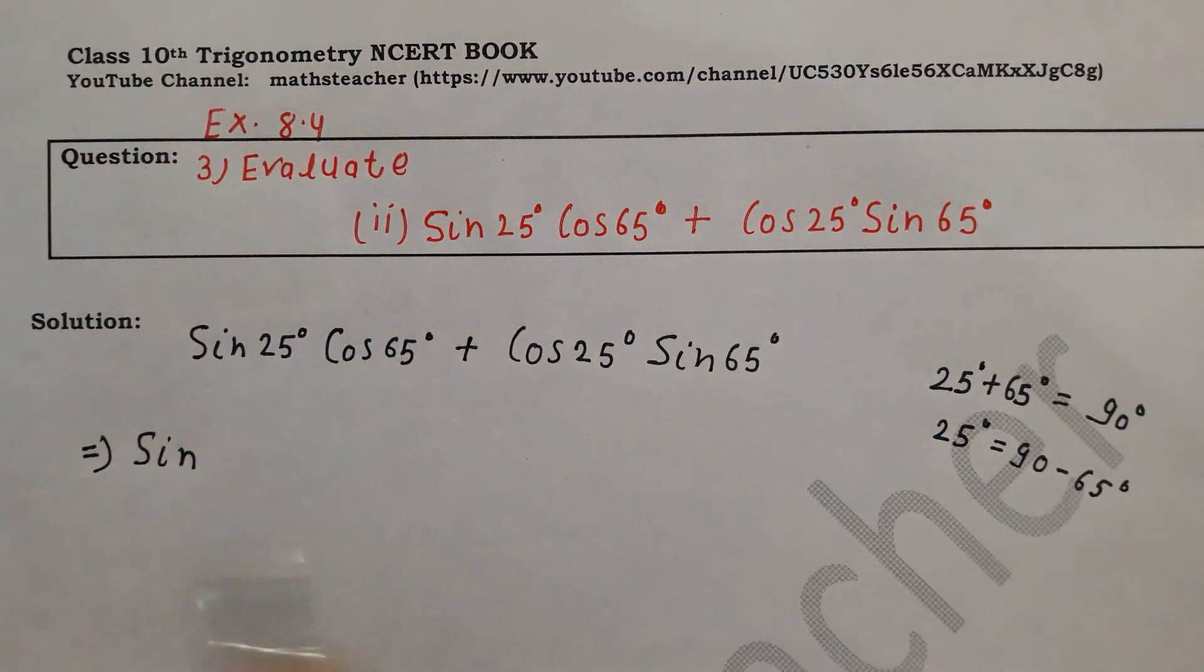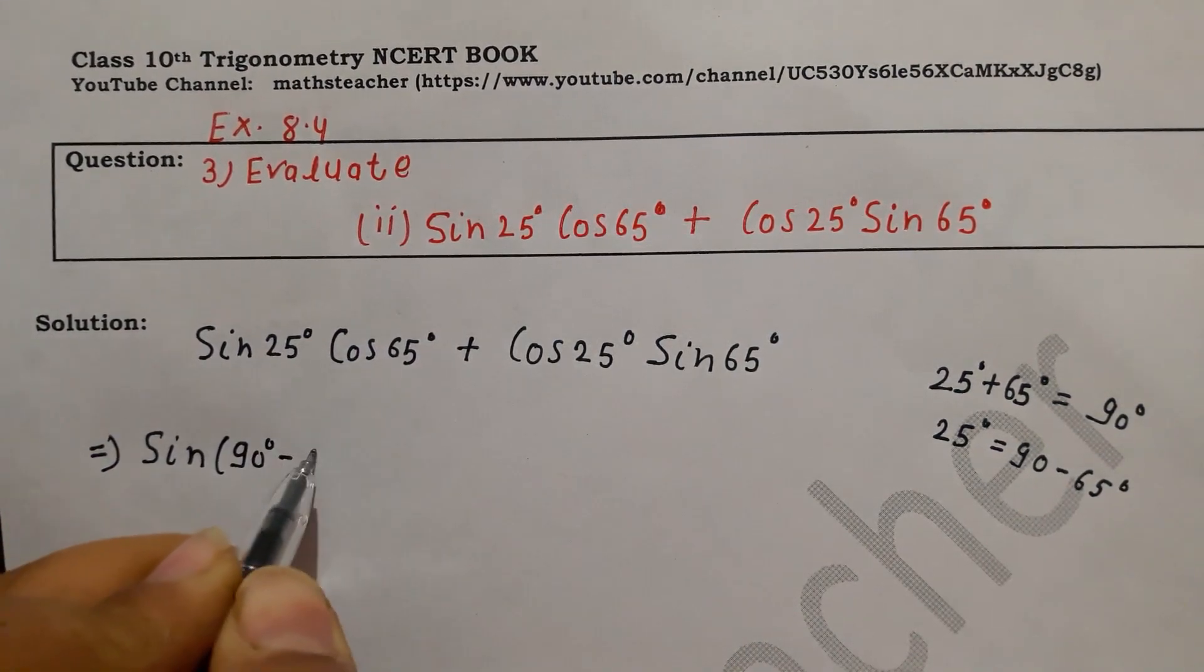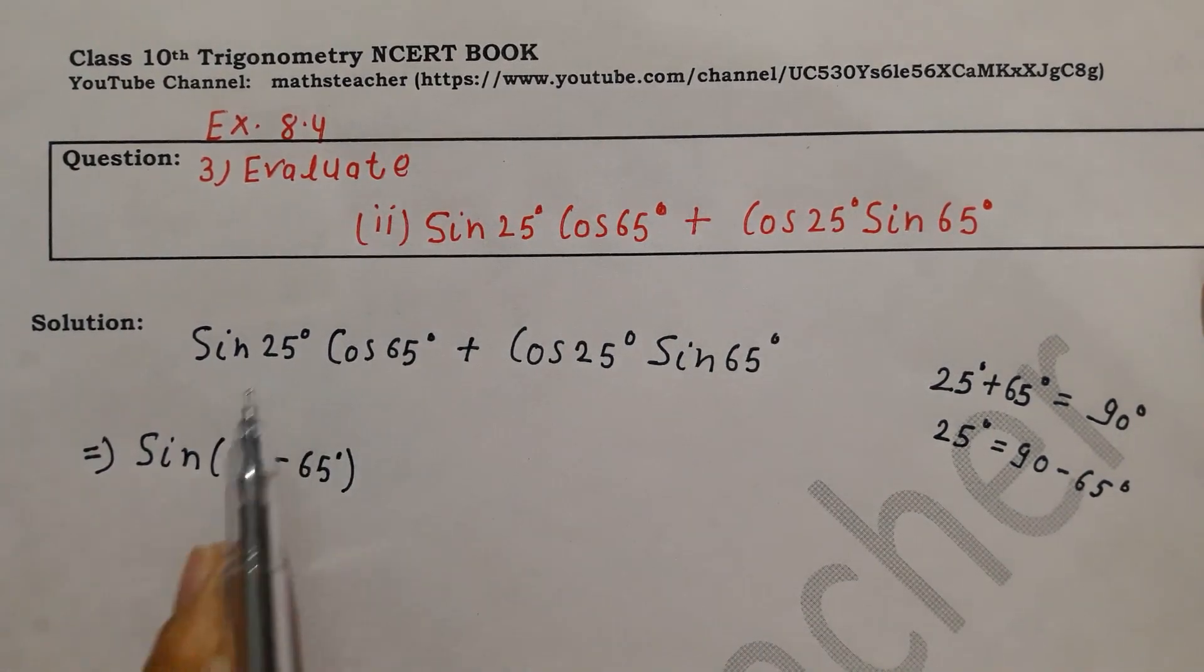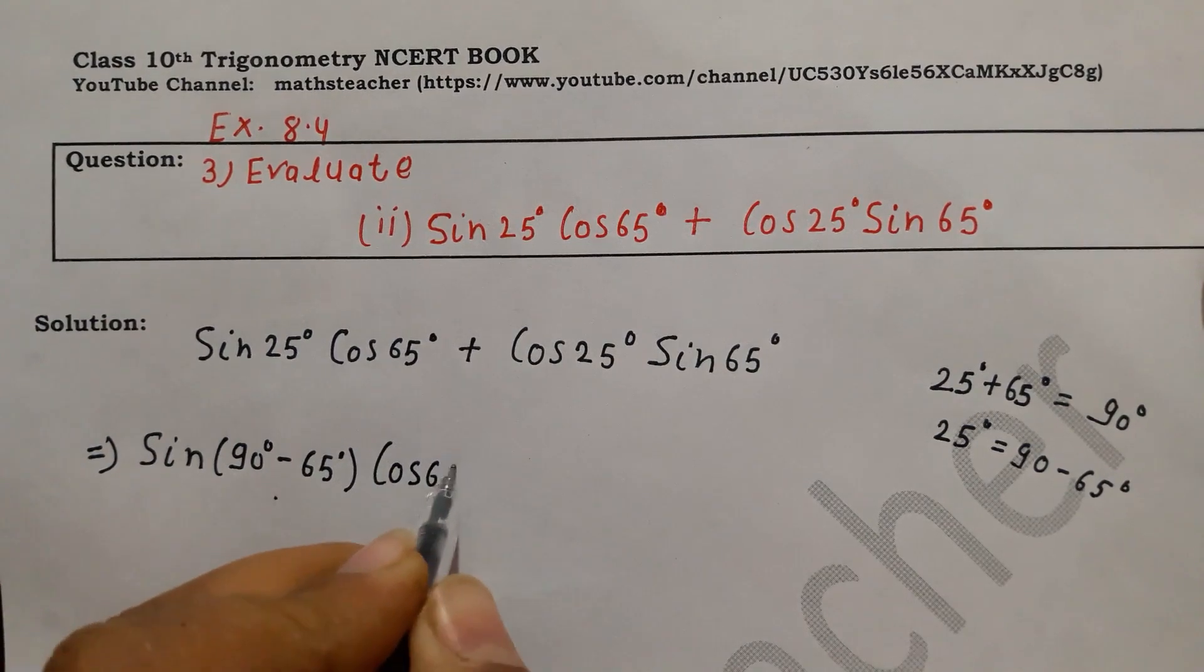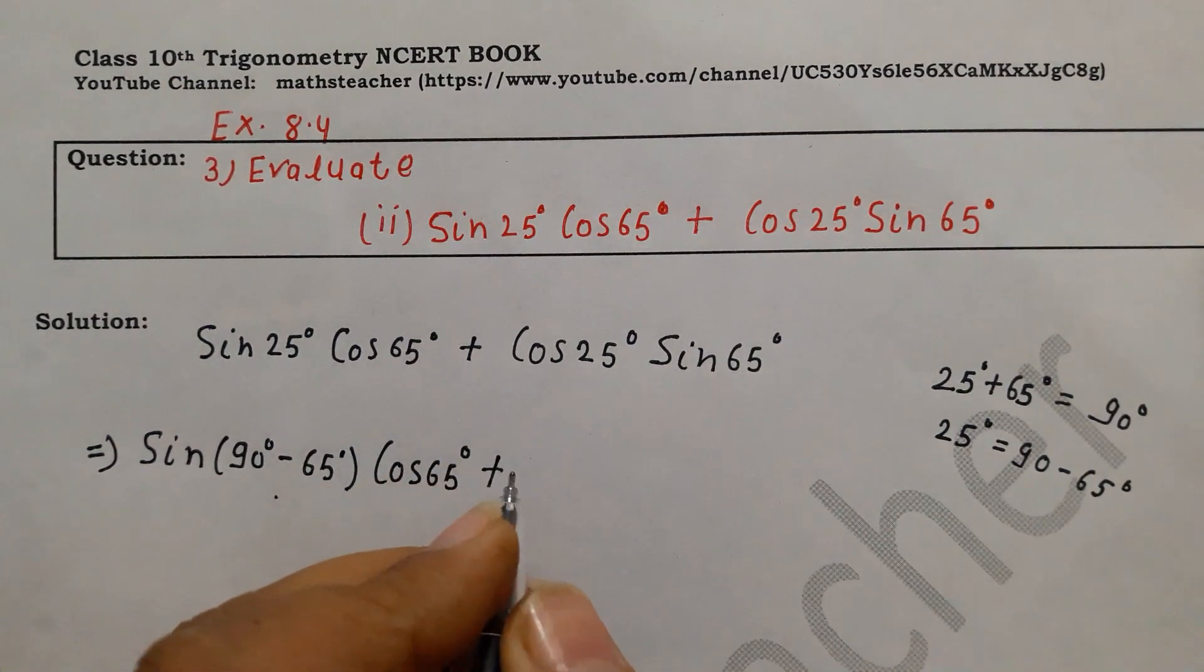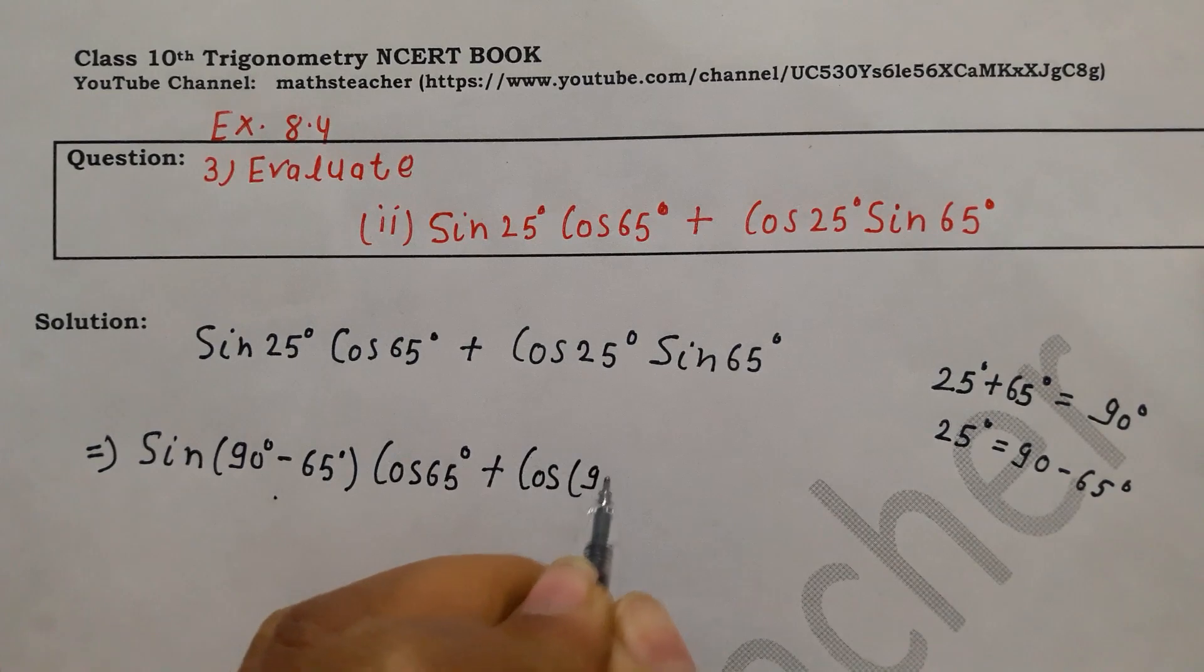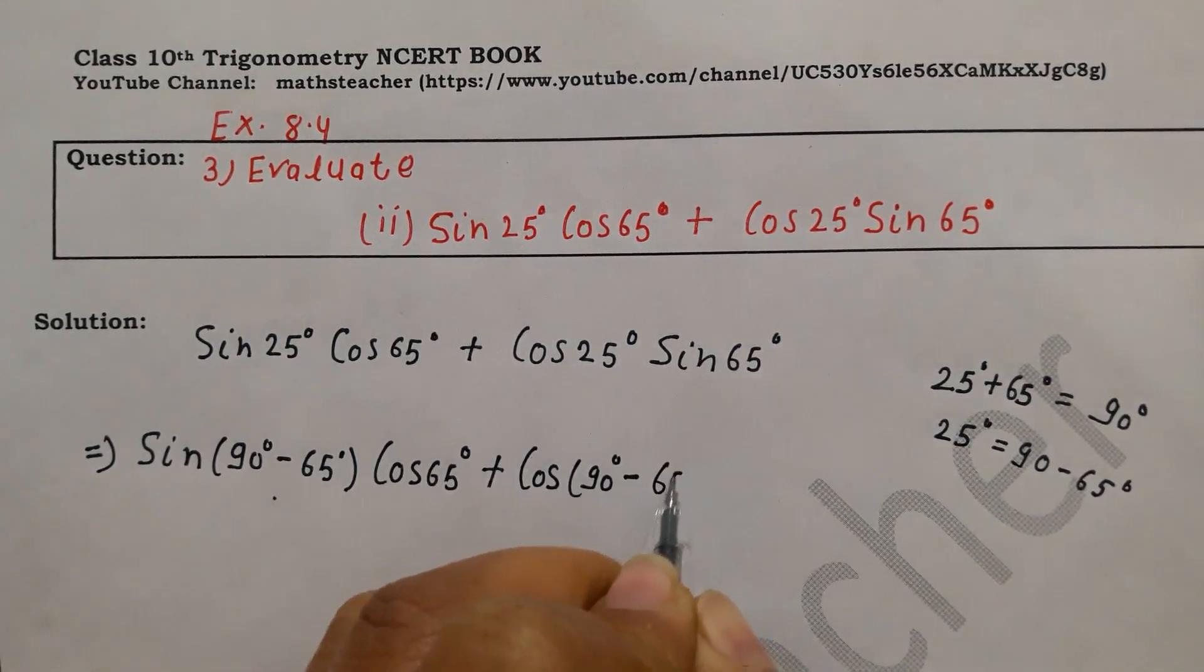And where we have to put anything? Where we have put it: 90 degree minus 65 degree. So what is this? We have to put this value as complementary angle. And cos 65 degree as it is. Same here, we have to put it. Here we have to put it: 90 degree minus 65 degree and sin 65 degree.